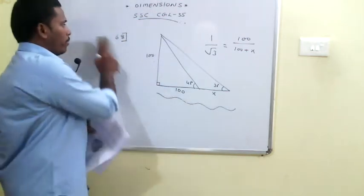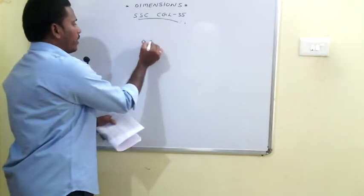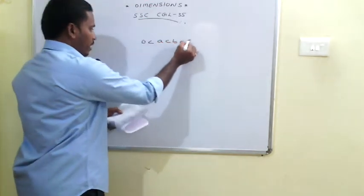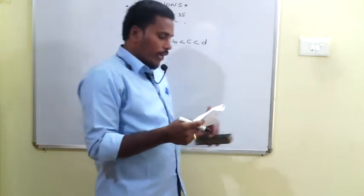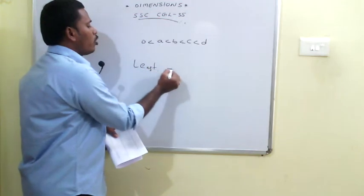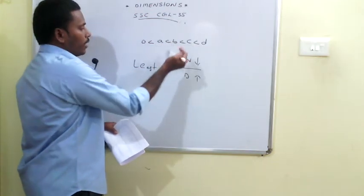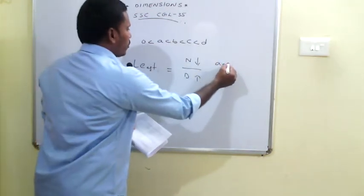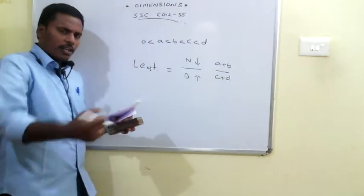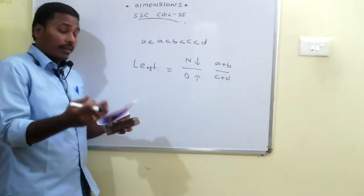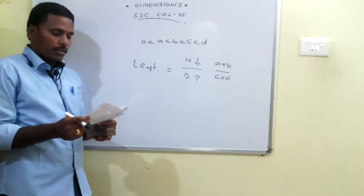The 69th problem: given 0 < A < B < C < D, which fraction among the options has the least value? To minimize a fraction, the numerator should be small and the denominator large. The smaller values are A and B, and the larger values are C and D. So the least fraction is (A+B)/(C+D), which is option A.